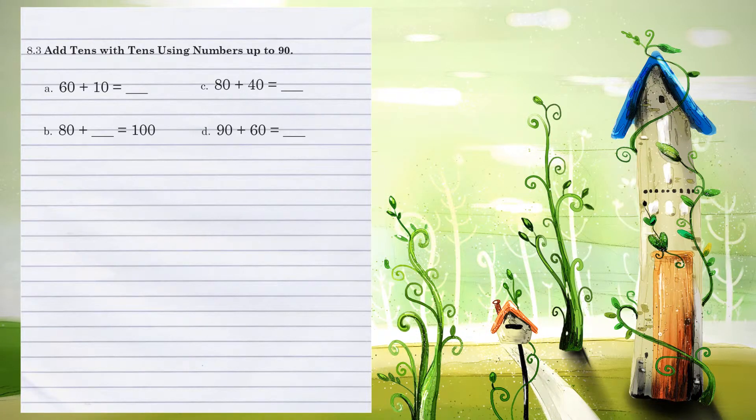Unit 8.3, adding 10s with 10s using numbers up to 90. Let's look at example A, 60 plus 10. Because both of the 1s positions are 0, we're still going to have a 0 in our answer. If we look at our 10s position, 6 plus 1 is 7, for an answer of 70.